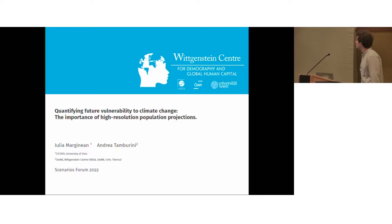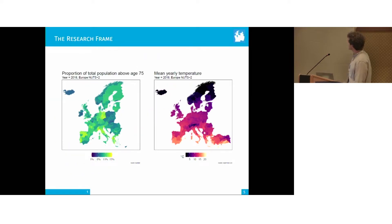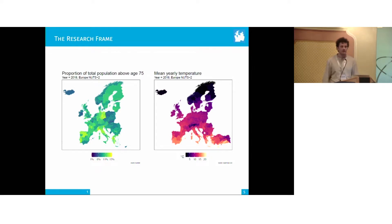I am Andrea Tamburini from the Wittgenstein Center, and I will follow up on the discourse that Julia started. I will present our alternative approach for subnational population projections, where we increase the geographical scaling and focus on the European case. The main message is that in Europe there coexist very different climates and very different population structures.